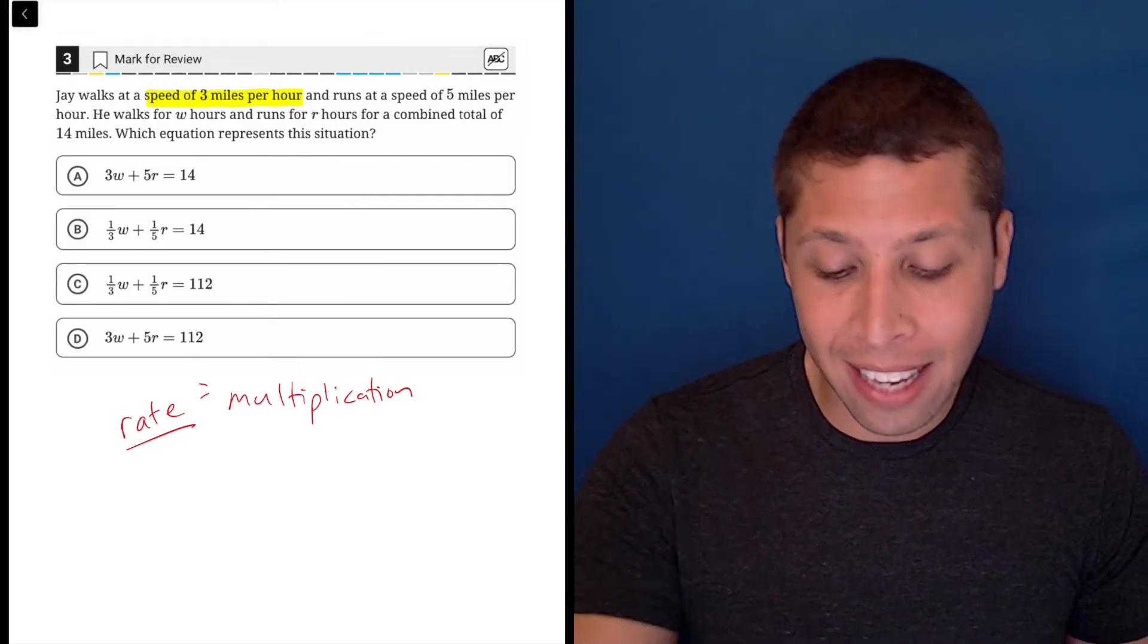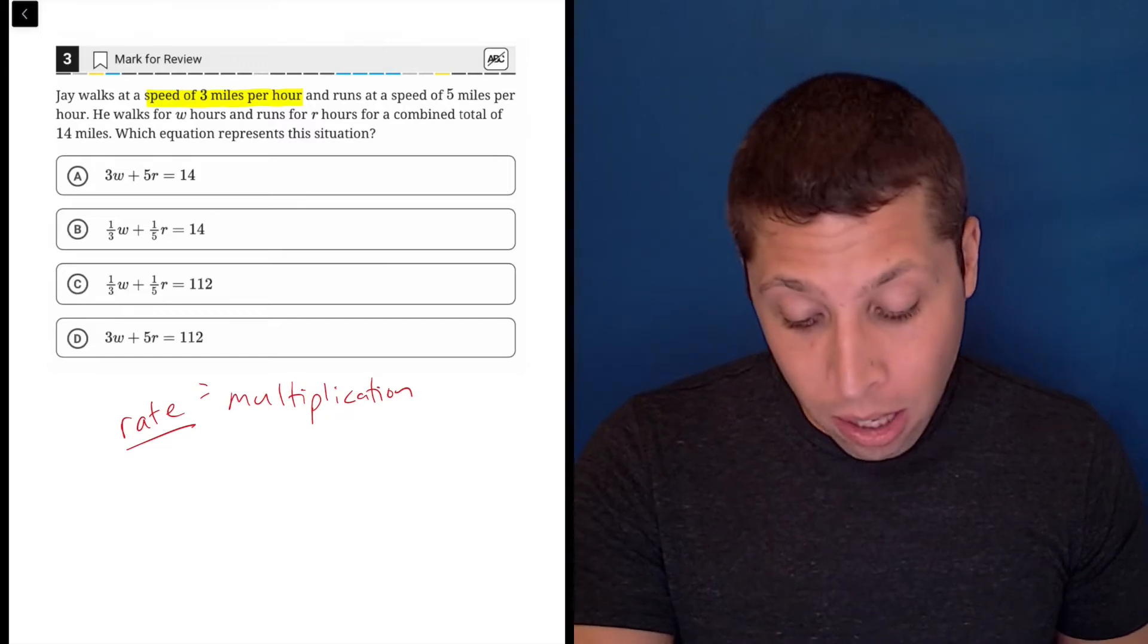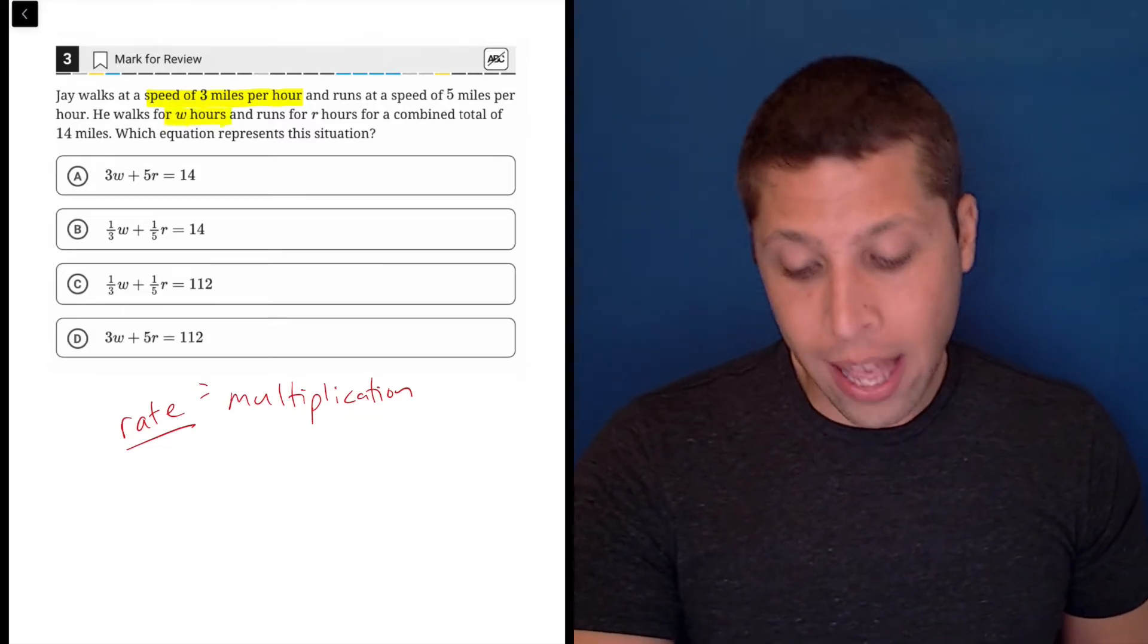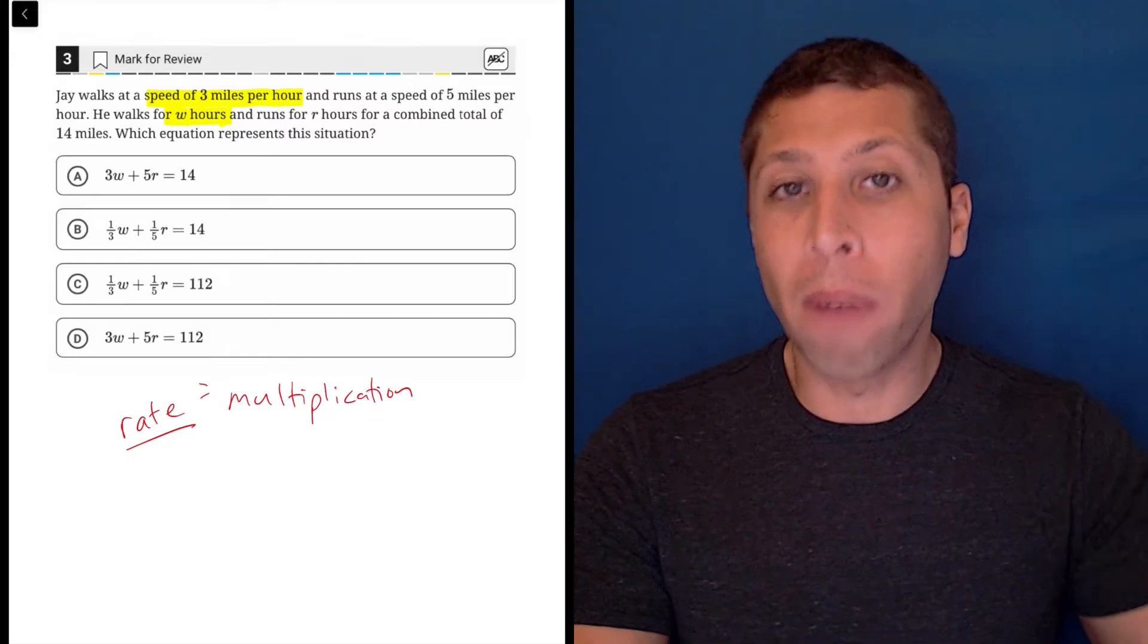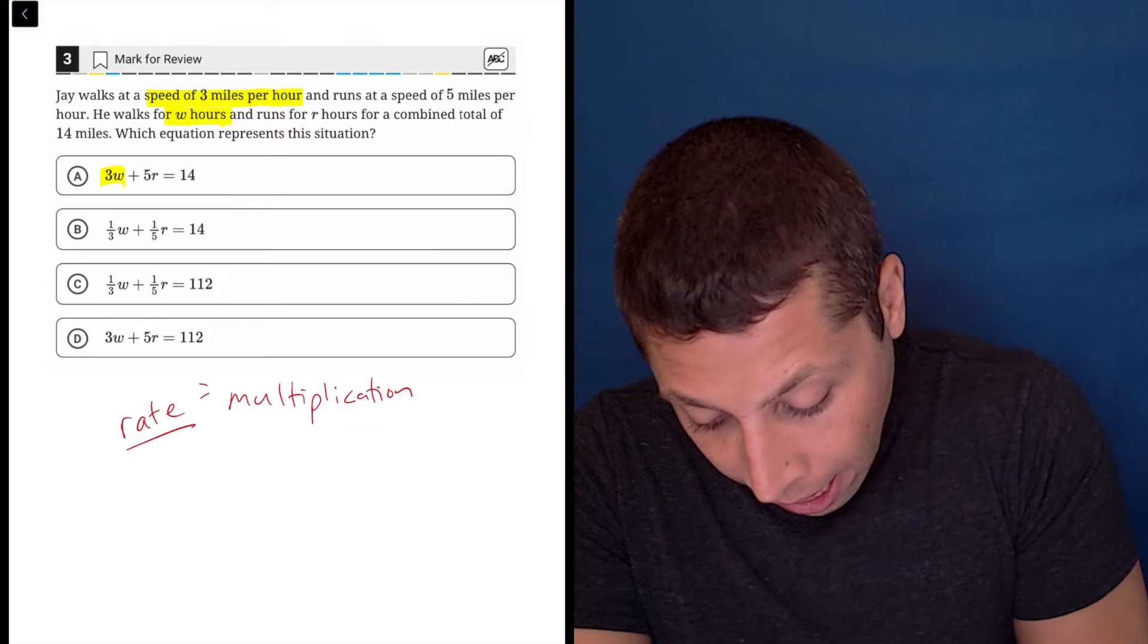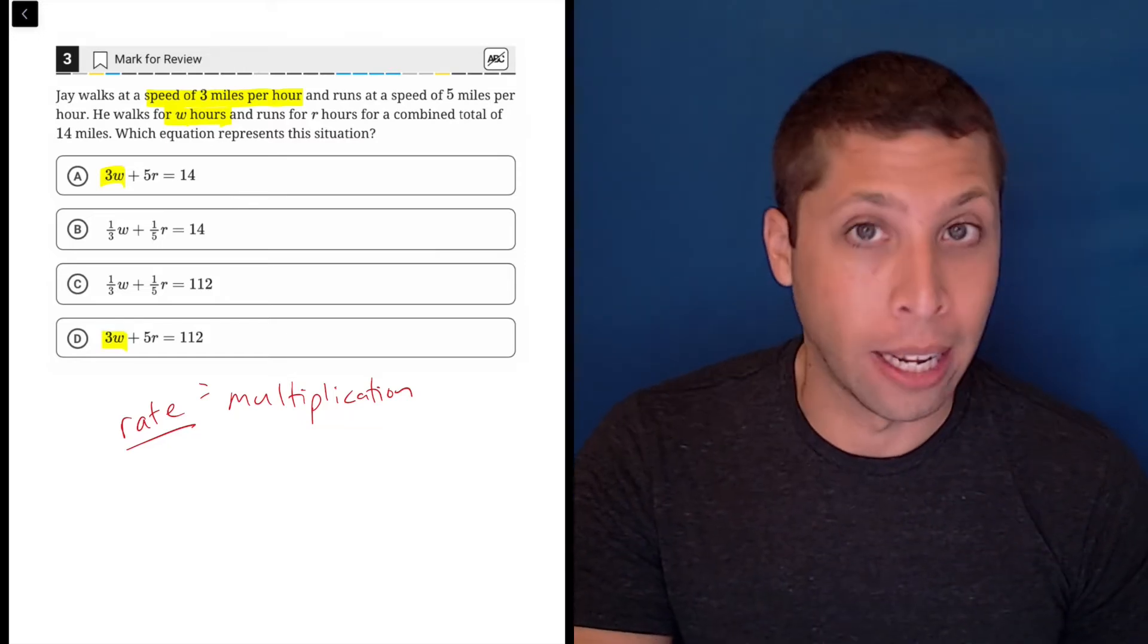And so that tells us that when we know the number of hours that Jay walks, we are going to multiply that by three, right? So we're looking for something like 3W in our answer choice.